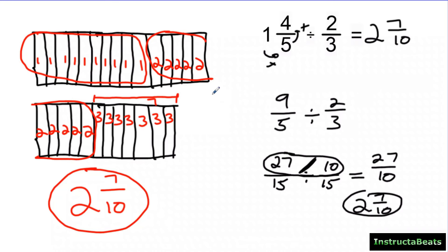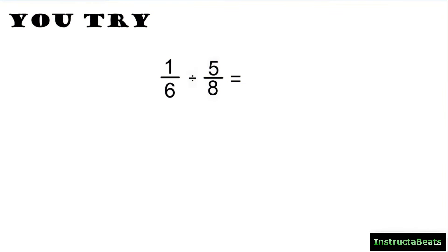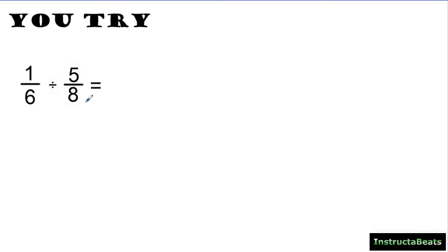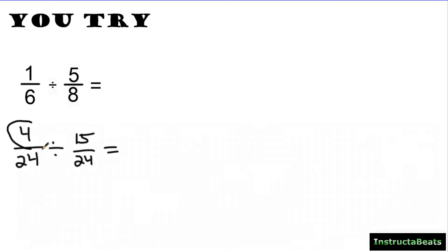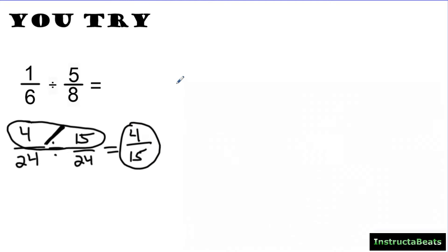Let's look at a you-try problem. You do not need to draw the entire area model — focus on the efficient way: find the common denominator, then divide across. Pause and try it out. The common denominator for 6 and 8 is 24, so four sixths becomes 4 over 24, and you're dividing by 15 over 24. Now the denominators are the same, so just look at the numerators. Since the dividend is smaller than the divisor, your answer is a fraction: 4 divided by 15 gives us 4 over 15.